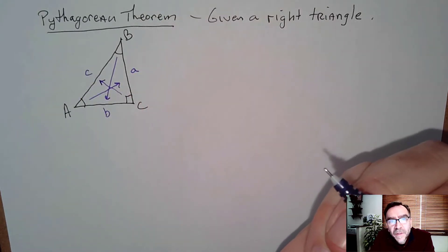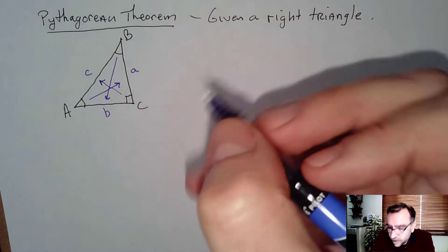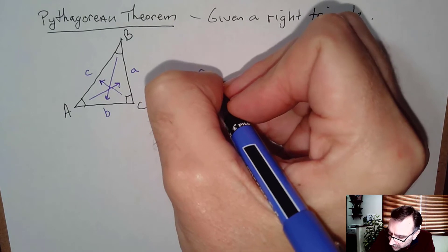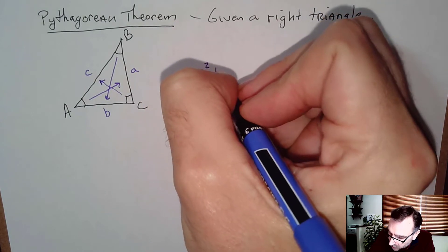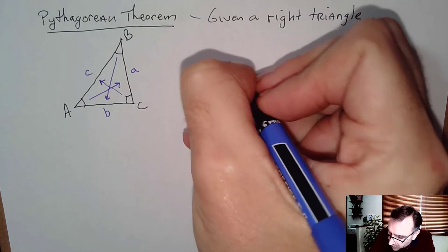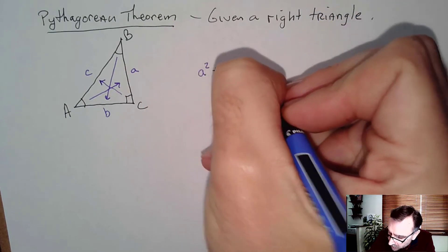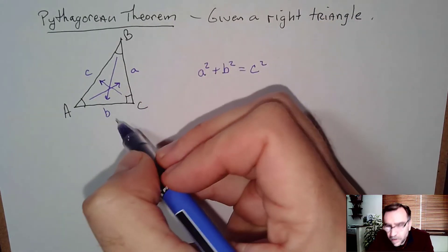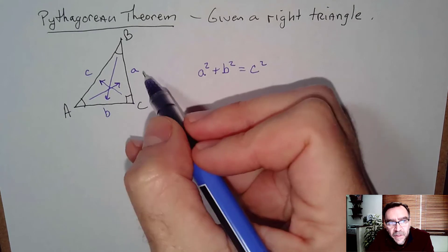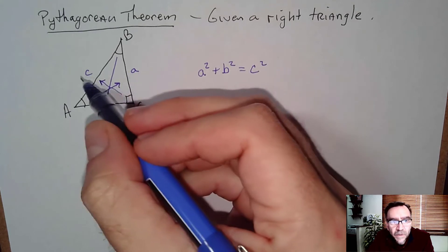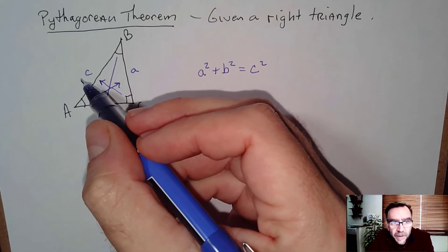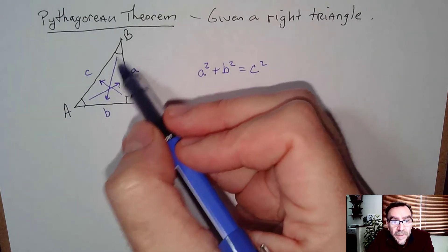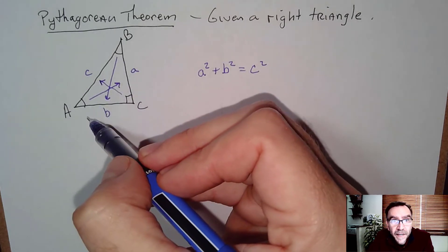Doing that, we can then say for the Pythagorean Theorem: a squared plus b squared equals c squared. In other words, leg squared plus leg squared has to equal the hypotenuse squared. The hypotenuse is the longest side.